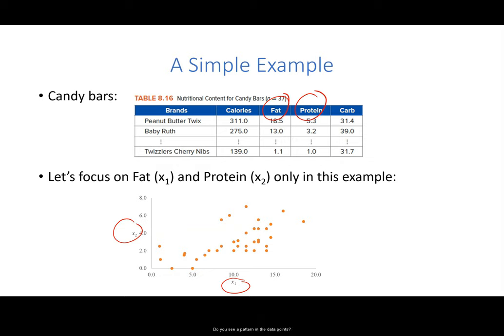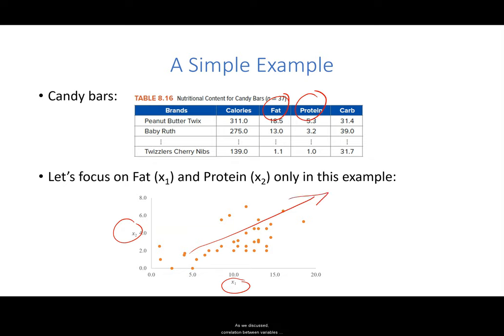Do you see a pattern in the data points? You have probably noticed a positive correlation between fat and protein. As fat increases, protein also increases. As we discussed, correlation between variables indicates information overlap, suggesting that the information in the fat variable is repeated in the protein variable and vice versa.